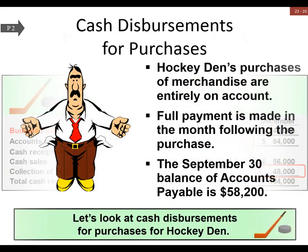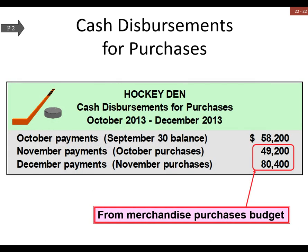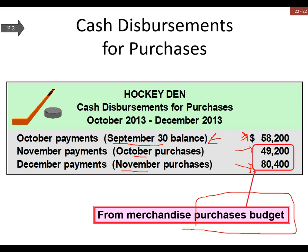The next issue is our cash disbursements — specifically when we have to pay in cash for the inventory we're buying. The inventory payment happens the month after, so September's accounts payable balance is October's cash out. We roll it forward: October pays in November, November pays in December. That's where we end up with our actual purchases budget amounts.